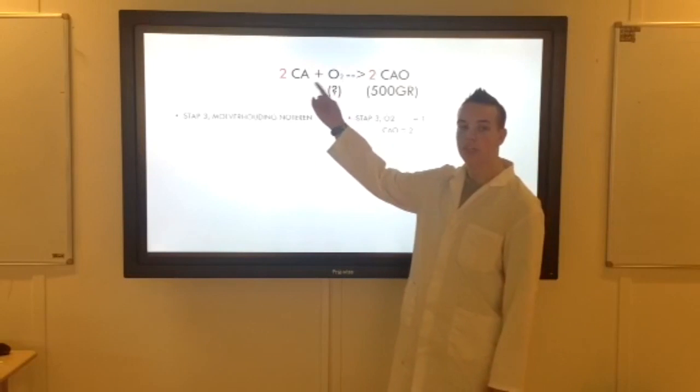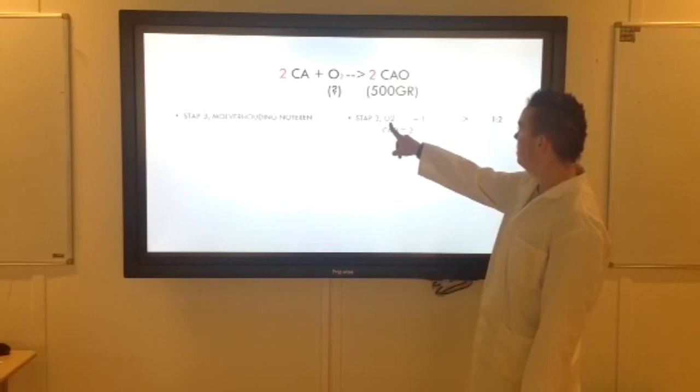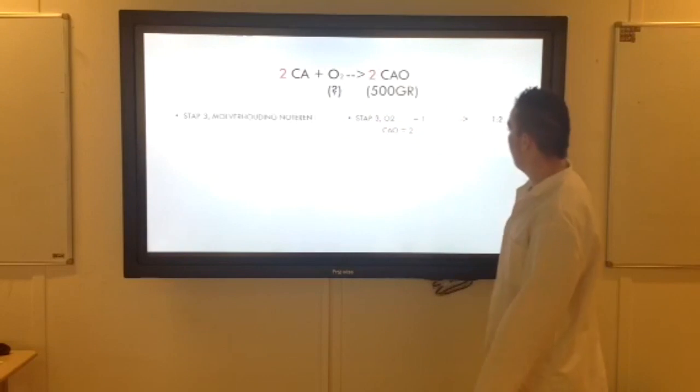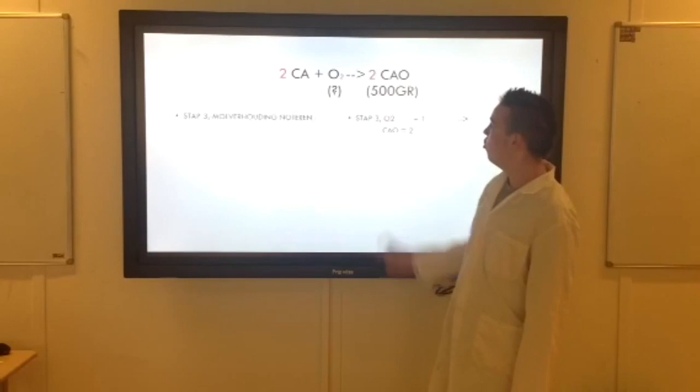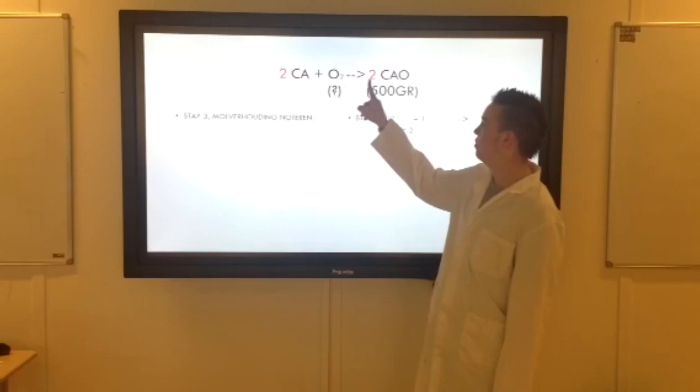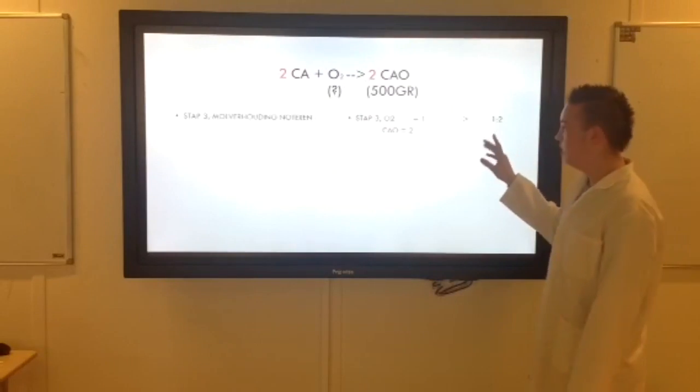Ik heb er een voorbeeld bij. We kijken even naar de getalletjes hier voor de stoffen. O2 staat eigenlijk een 1 voor, want er staat niks voor. Voor de CaO staat er een 2. Dus de molverhouding is 1 staat op 2. Dit schrijf ik erop als 1:2. Dat is je molverhouding.